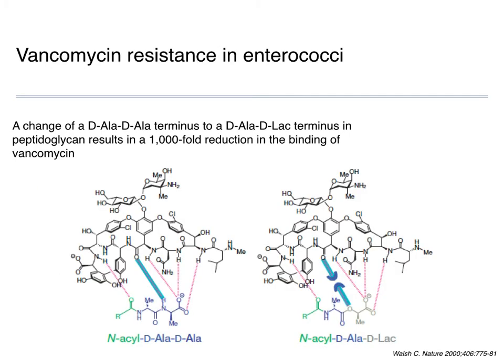From a resistance point of view, we have resistance in enterococci compared with resistance in staphylococci. Resistance in enterococci is target site modification: the D-ala D-ala terminus becomes a D-ala D-lac terminus, and vancomycin can't bind to that D-ala D-lac terminus, so you have a lack of inhibition of cell wall synthesis and therefore resistance to vancomycin.